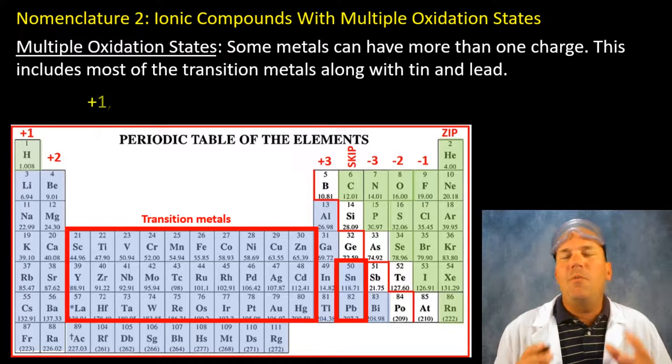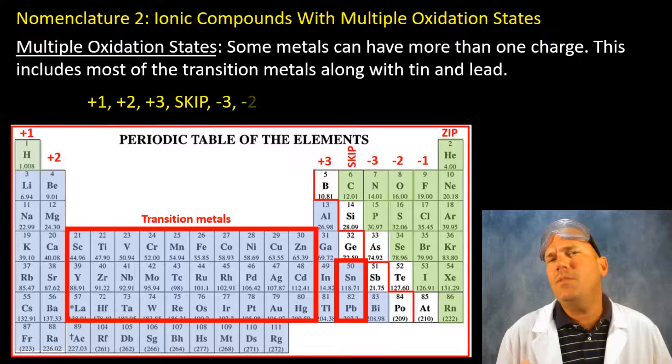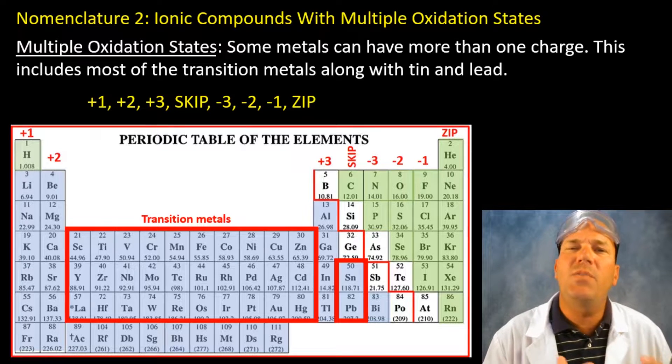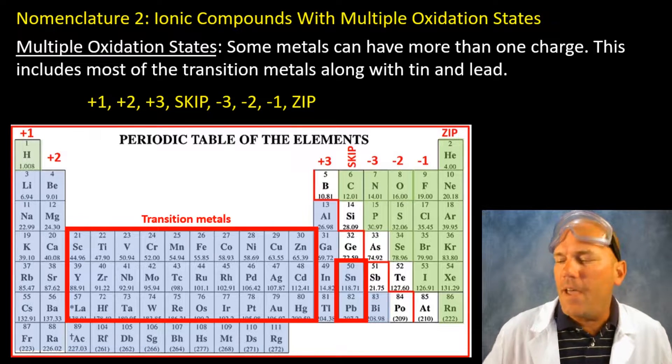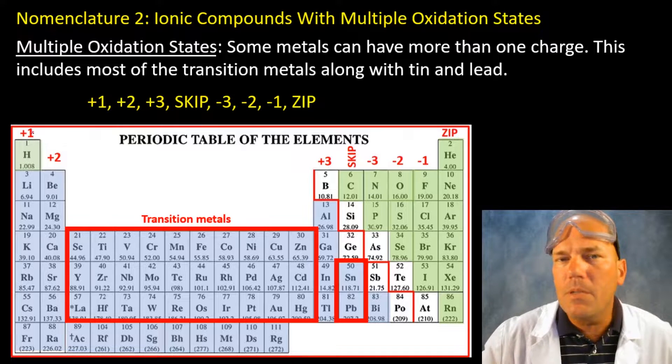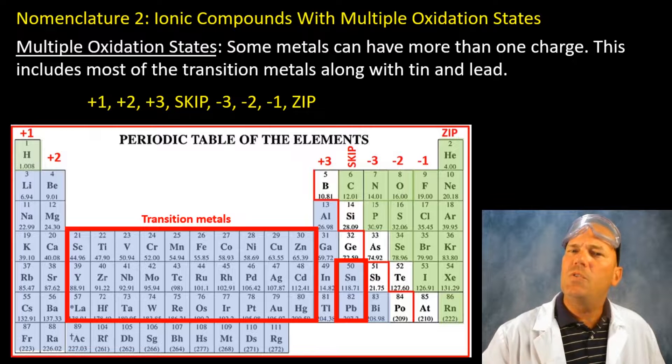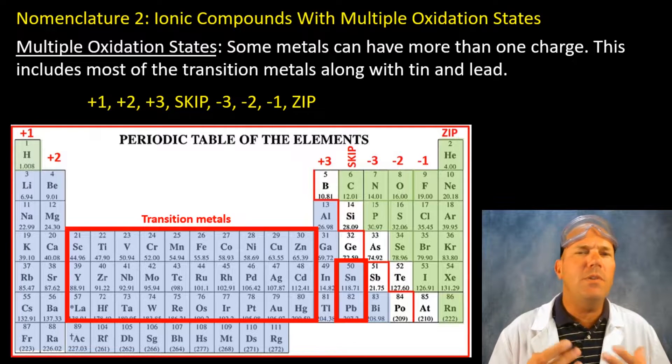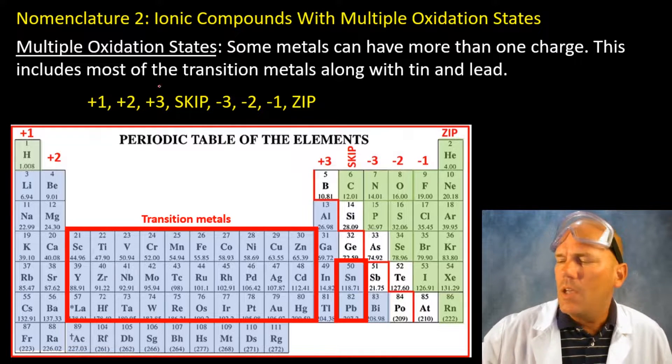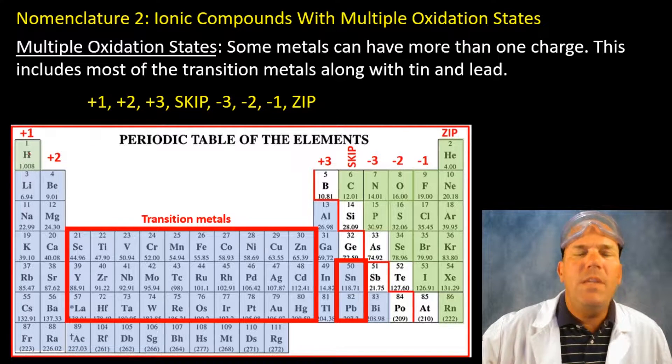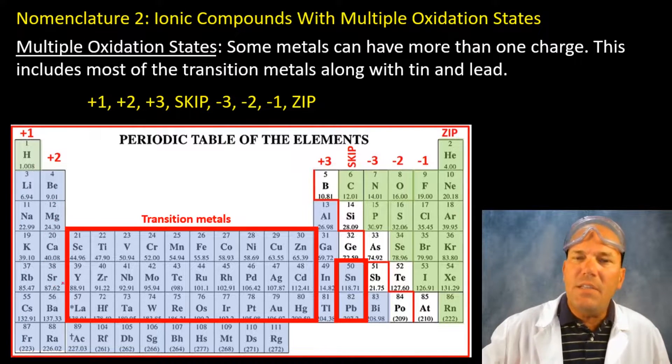Also I would like to expound on our saying plus one plus two plus three skip minus three minus two minus one zip and reiterate that these numbers you've written across the top of your periodic table refer to the ion charge that these groups or families will typically assume.